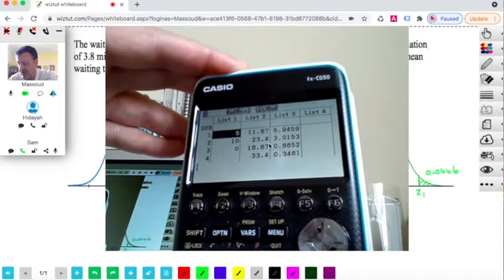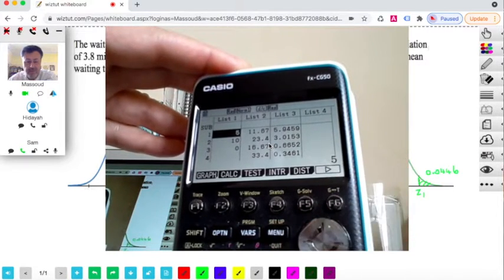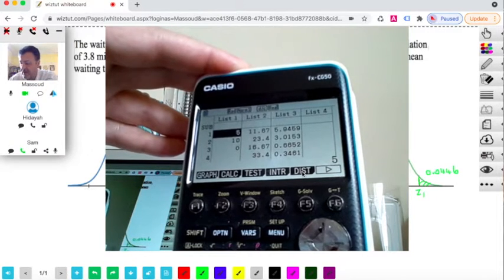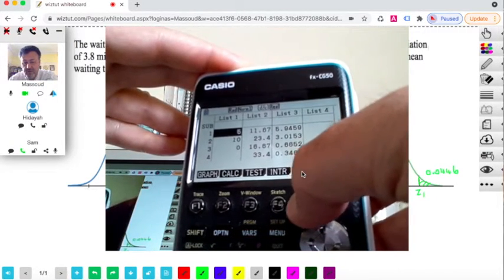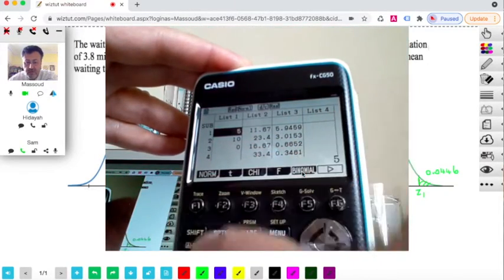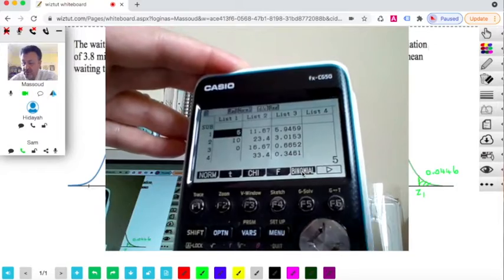So when you go to stats, you'll get this screen. And we will be using the distribution. So that's the distribution there. I'll be using the distribution, and I will be using the normal distribution.